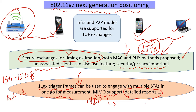In FTM we talked about only time of flight, but in 11az both parties can negotiate and agree to obtain much more detailed information from MIMO channel estimation, which can be done securely and enhanced with additional fields in the NDP to get a better channel estimate. So 11az incorporates all the 11ax flexibilities and also brings security to the timing, angle, and channel estimation process.